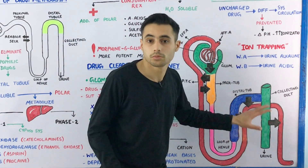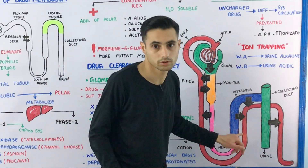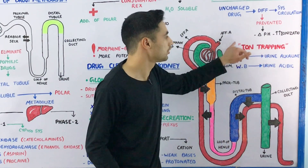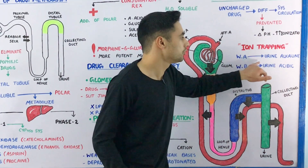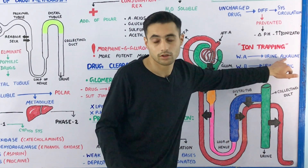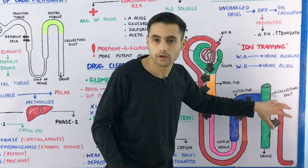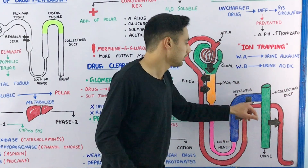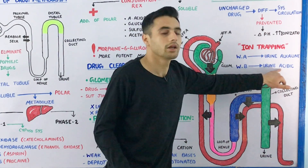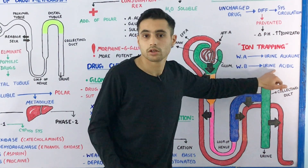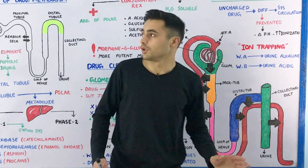This process is also known as ion trapping. For weak acids, the urine is made more alkaline — this makes the drug ionized so it is not reabsorbed into the peritubular capillaries. For weak bases, the urine is made acidic so the drug becomes ionized and reabsorption is prevented.